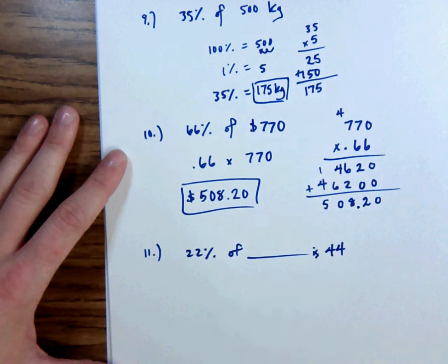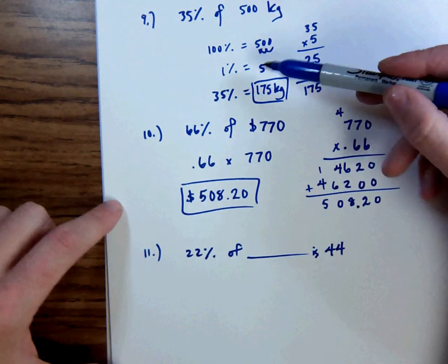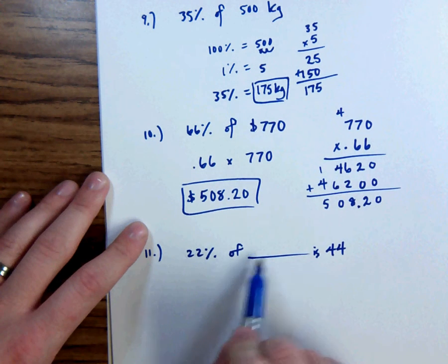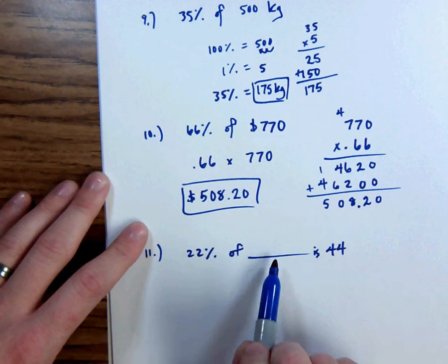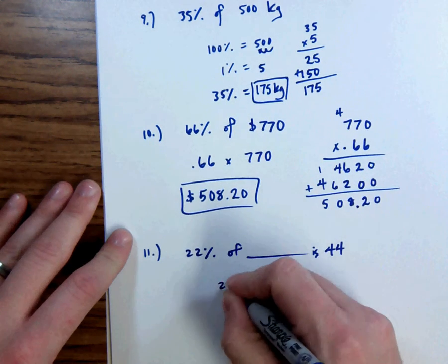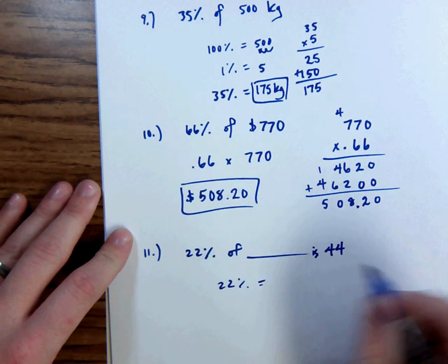22% of what is 44. So this works very similar. If I do it like this one right here, I'm actually going to say that behind 'of' is blank. So we don't know 100%. We're actually going to find that. We're basically finding the base of the problem. We know that 22% of the problem is 44.